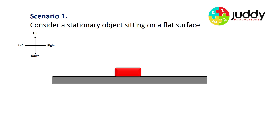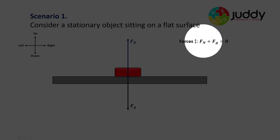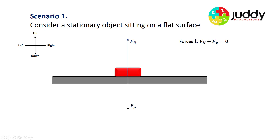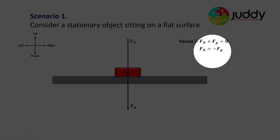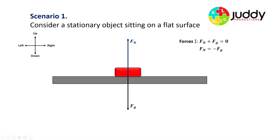As a starting point, let's consider a stationary object sitting on a flat surface. All objects have a force of attraction towards the earth — that's what we call the gravitational force, Fg, as shown in the diagram. In response, the surface pushes back up against the object with what we call a normal reaction force, Fn. The sum of these two forces is zero because the object isn't accelerating up or down, so the vector addition of Fn and Fg is zero.